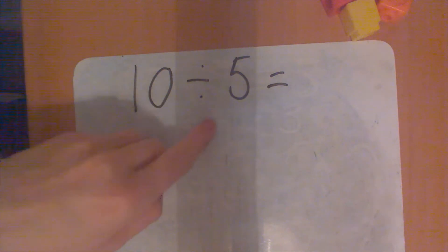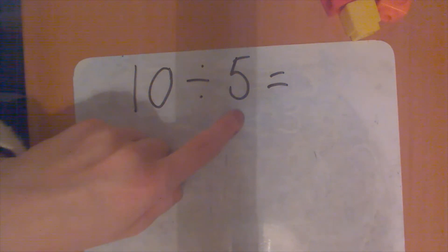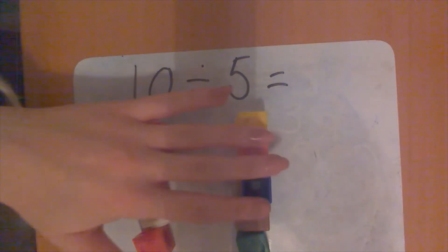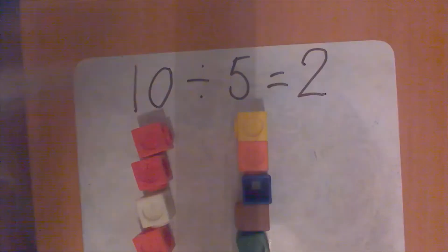Let's look at this number sentence: ten divided by five equals. We're dividing by five today. I could count in fives to find how many fives are in ten — let's count: five, ten. That took me two jumps. I'm going to check by grouping ten cubes into groups of five: one group of five, two groups. So ten divided by five equals two.